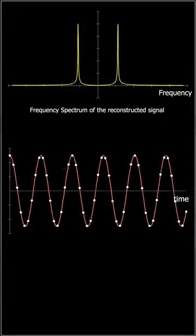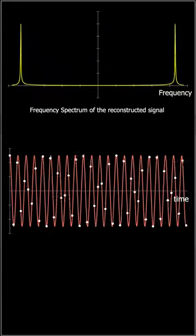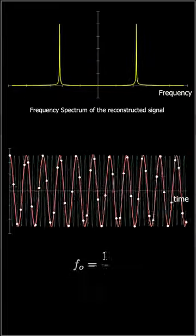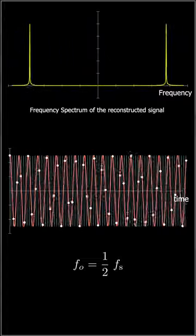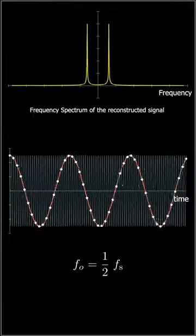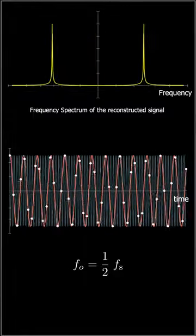Frequency aliasing is a phenomenon related to discrete time signals. There is a maximum frequency determined by the sampling rate before which the signal can be perfectly reconstructed. After that frequency, any increase in the original signal results in a reconstructed signal with lower frequency.